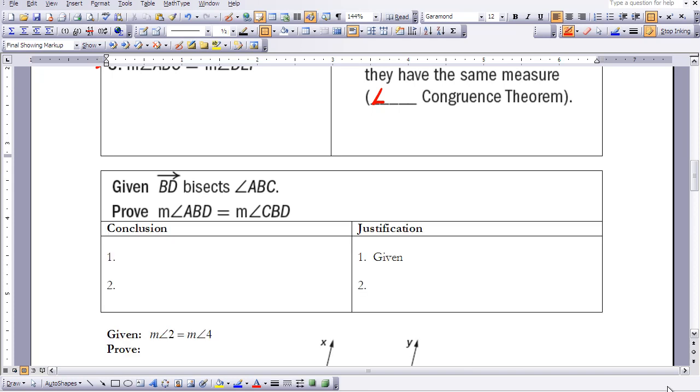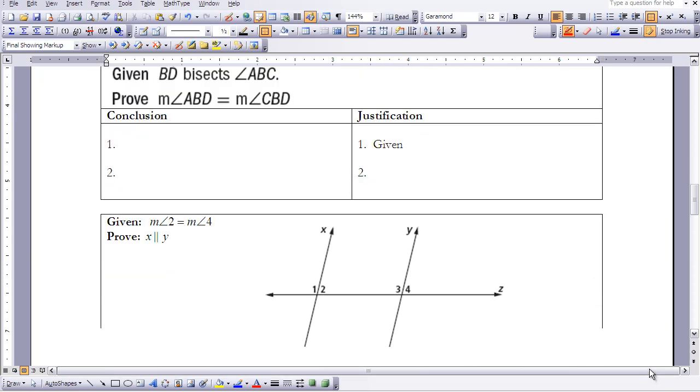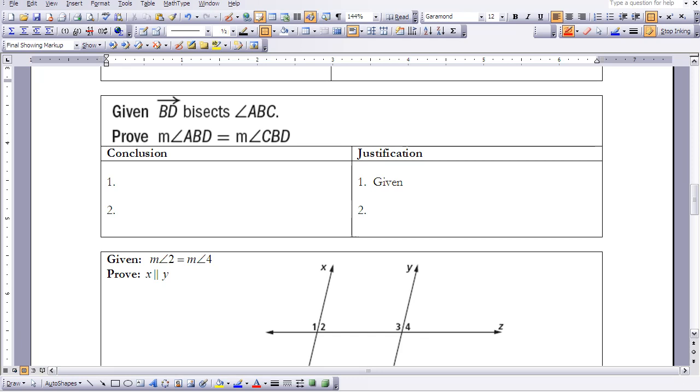Now let's move on to the next example. We have BD bisecting angle ABC. So once again, I'm going to draw my picture: ABC, B, C. I have a ray going through here, and it says it's bisecting. So I'm going to mark it up, showing that those two angles are equal, because that's what a bisector does. I'll label my ray. The first line of my proof is always my given, so go ahead and rewrite that now.